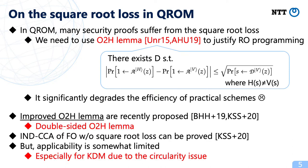Recently, an improved variant of the one-way-to-hiding lemma was proposed. By using it, Kuchta et al. showed that IND-CCA security of FO transformations can be proved without square root loss. However, its applicability is somewhat limited. Especially, it is not clear whether we can use it in the context of KDM security due to the circularity issue, as we explain later.